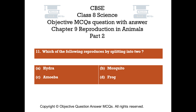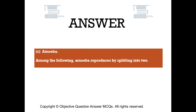Question number 11. Which of the following reproduces by splitting into two? Option A: Hydra. Option B: Mosquito. Option C: Amoeba. Option D: Frog. The right answer is Option C: Amoeba. Among the following, amoeba reproduces by splitting into two.